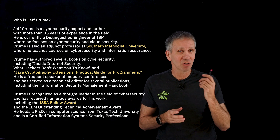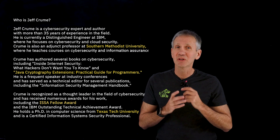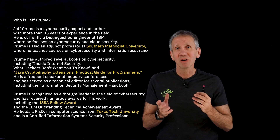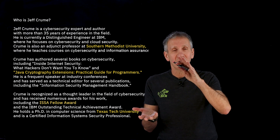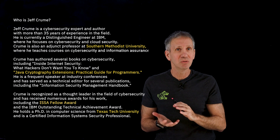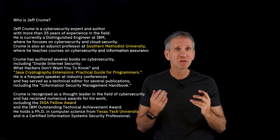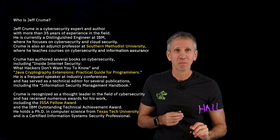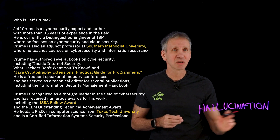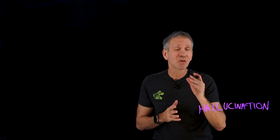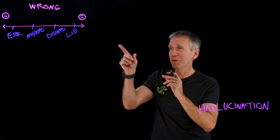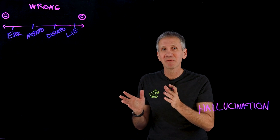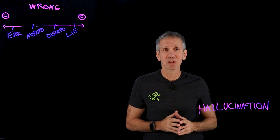Then it says I have a PhD in computer science, also true. But it says I got it from Texas Tech University, which is another fine university I've never been to and never taken any classes at. So what do we call these things? If you look at what's been said overall, it generally sounds true and rings generally true. But there are a few errors, and those errors that come out of a generative AI like a large language model — we call those hallucinations. Hallucinations are mistakes that can happen with this. So if we put back up our spectrum of wrongness, I'd suggest that's more on the side of error, maybe misinformation, but probably just an outright error. It's one of the things that happens as a result of generative AI.